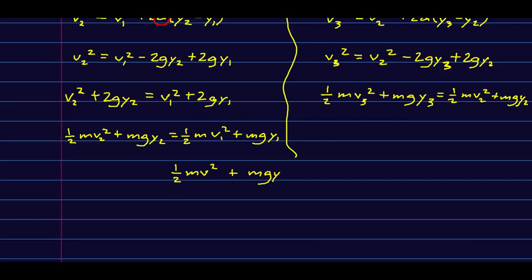So, this expression, a half MV squared plus MGY, is a constant. It's a conserved quantity. And so, this is the thing we're going to call the energy. And look, this piece has to do with how fast the ball is going. That's the kinetic energy. And this piece has to do with how high the ball is. That's the gravitational potential energy.